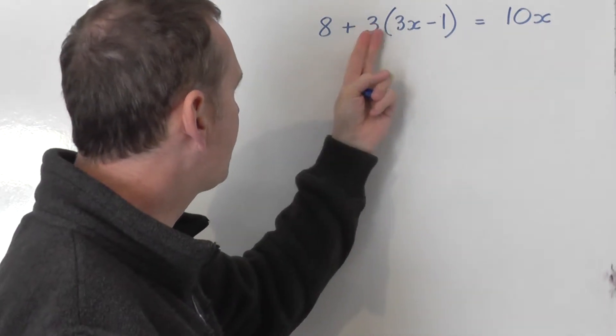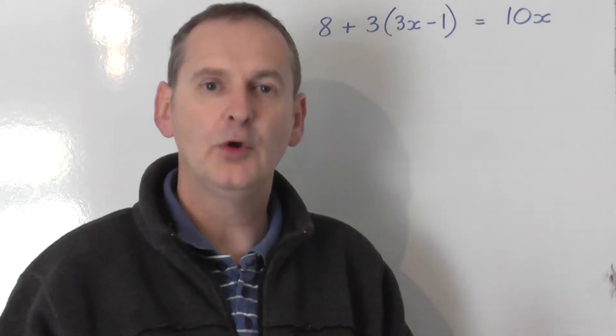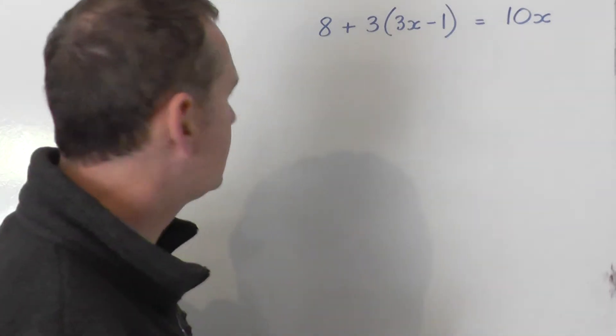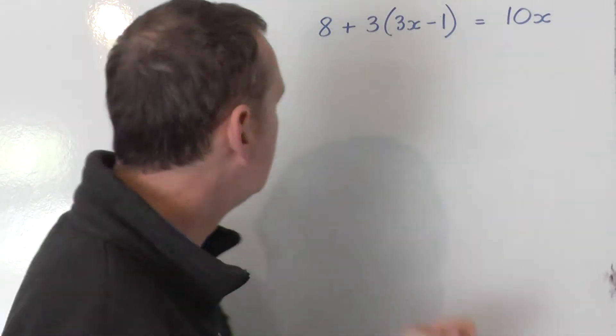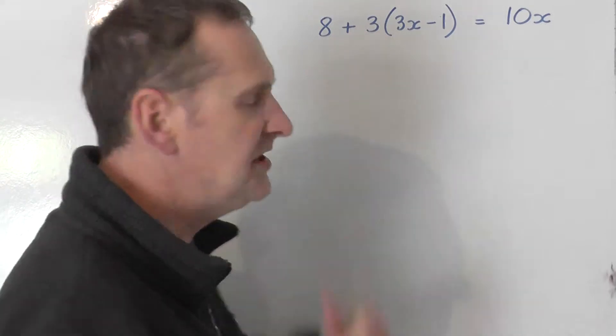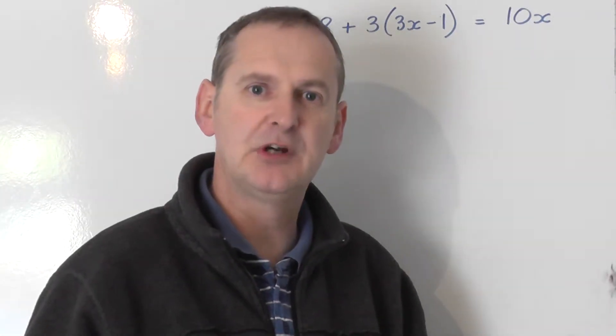So in a minute I'm going to multiply the 3 by the bracket. What you should not do in this particular case, which is very tempting for some people, is to say add the 8 plus the 3 together to get 11 and then you've got 11 lots of the bracket.